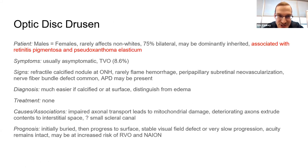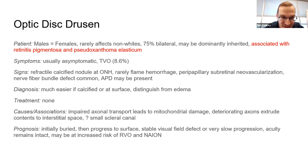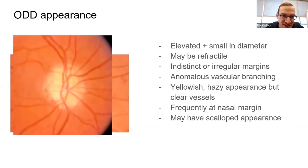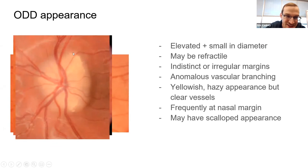Drusen — everyone loves drusen. Remember retinitis pigmentosa and pseudoxanthoma elasticum as commonly associated rare diseases. The photos are more important — pick out small refractile bodies peppered throughout, irregular blurred margins, and very clear drusen with that blurred disc margin. You can have ILM changes that make the disc look swollen.